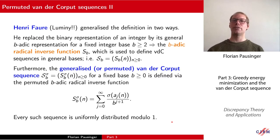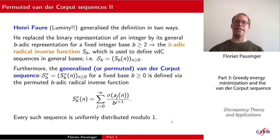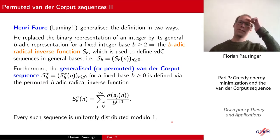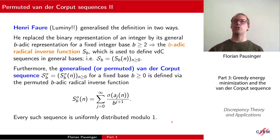There are several very interesting papers by Henri Faure, based in Marseille, who generalized the definition of van der Corput sequences in two ways in the early 1980s. First, he replaced the binary representation of an integer by its general base-b representation, which naturally gives a base-b radical inverse function. Instead of working in base two, he worked in arbitrary integer bases, obtaining a sequence for every integer base b.